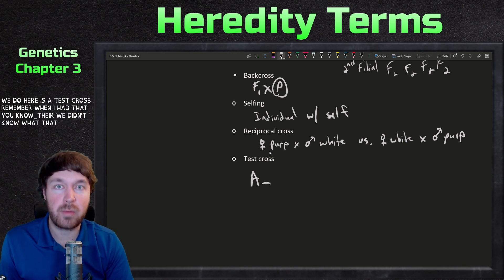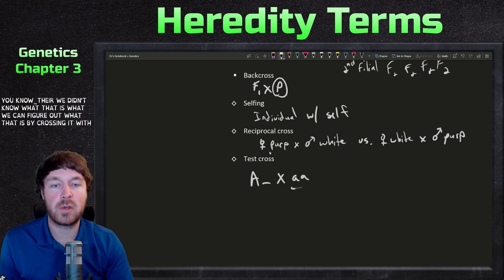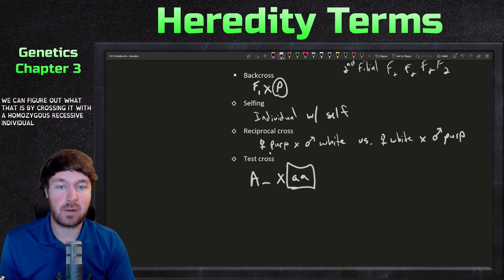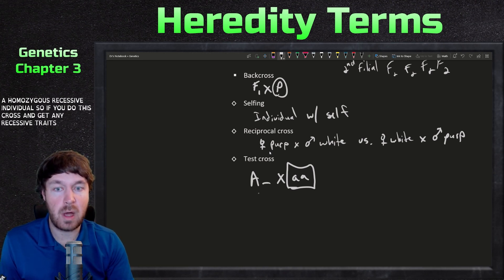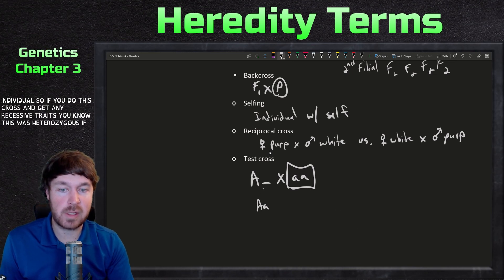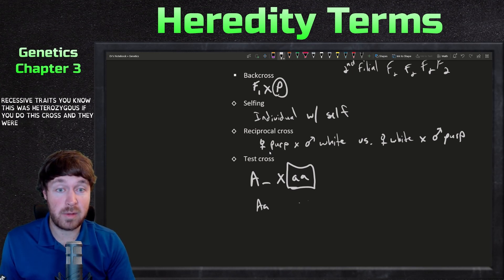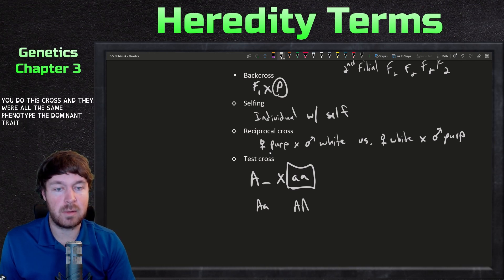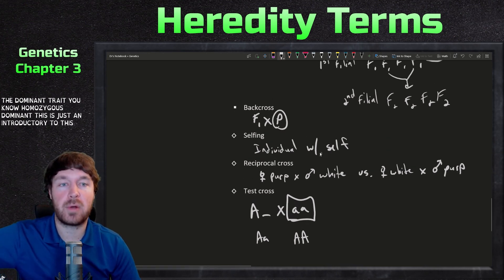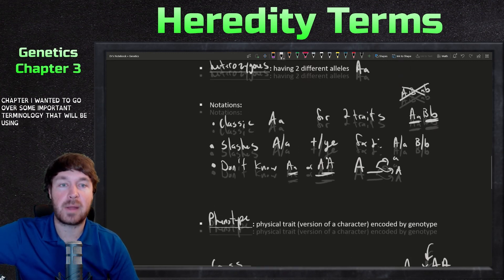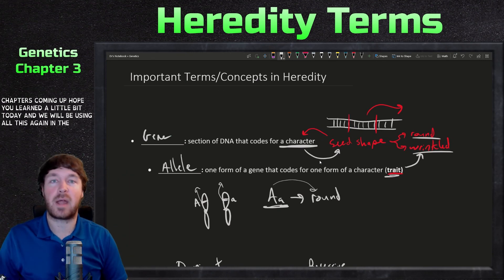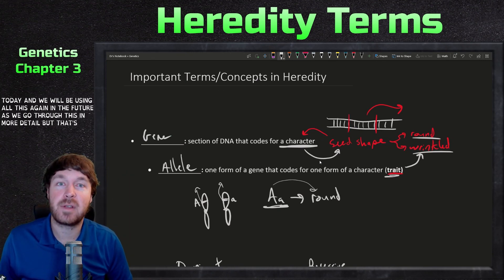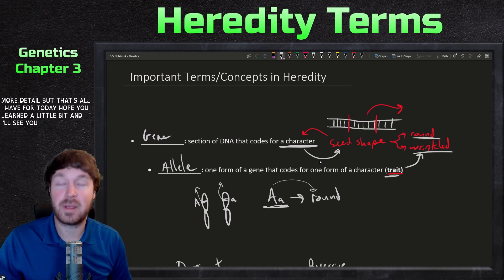The last type is a test cross. Remember the underscore notation where we didn't know the genotype? We can figure that out by crossing the unknown individual with a homozygous recessive individual. If you get any recessive traits in the offspring, the unknown was heterozygous. If all offspring show the dominant phenotype, the unknown was homozygous dominant. That's an introduction to this chapter's key terminology — we'll be using all of this again in future videos.